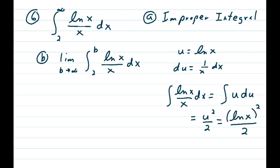This is u-substitution, where u equals natural log of x, du is 1 over x dx, so it's set up perfectly to get the integral of u du, which is the power rule, u squared over 2. So the improper integral at this point is the natural log of x quantity squared over 2.